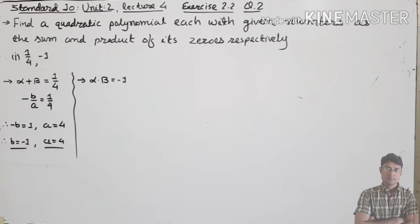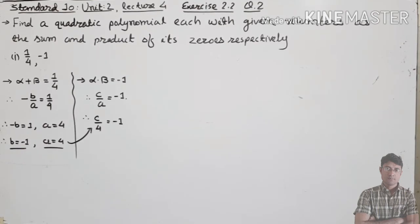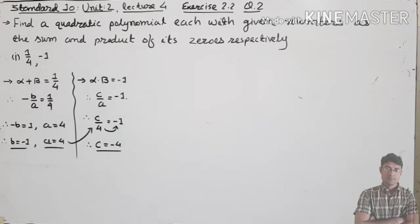Now the product — alpha into beta equals minus 1. And the formula for alpha into beta is c upon a. So c upon a equals minus 1. Since a equals 4, we get c upon 4 equals minus 1. Multiplying both sides by 4, we get c equals minus 4.